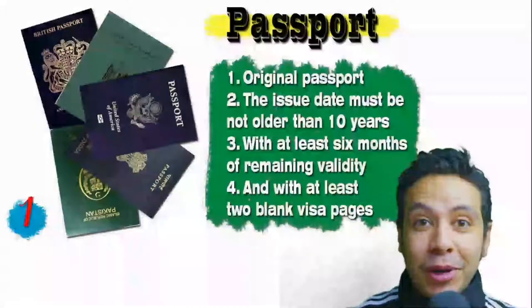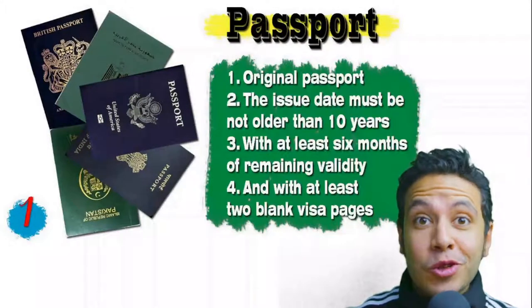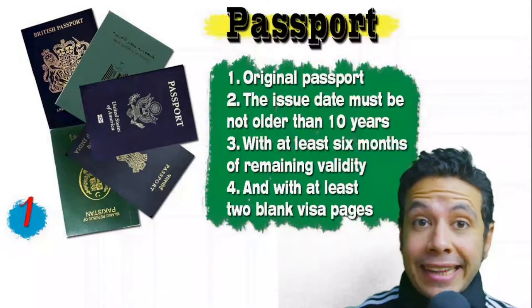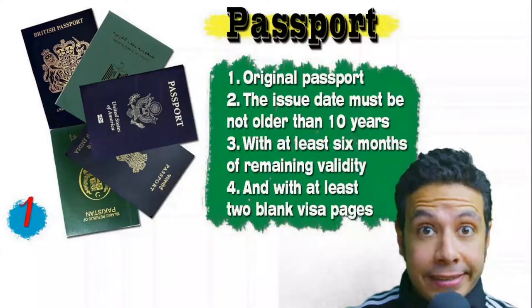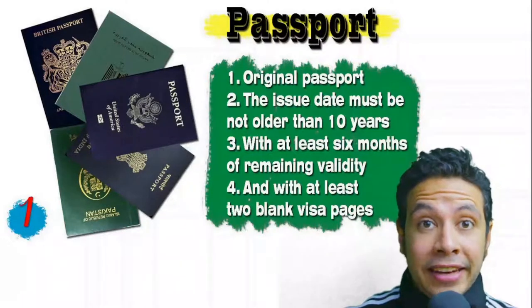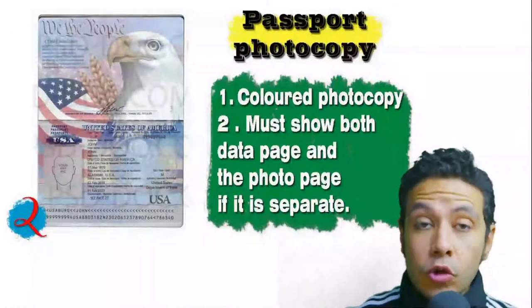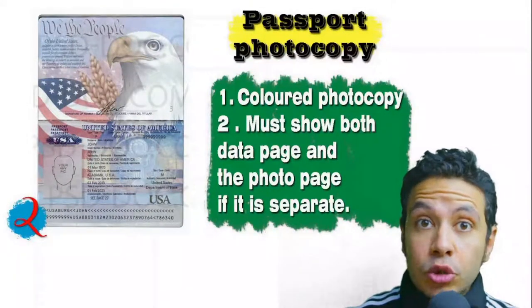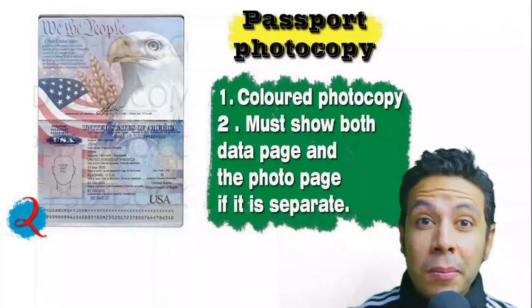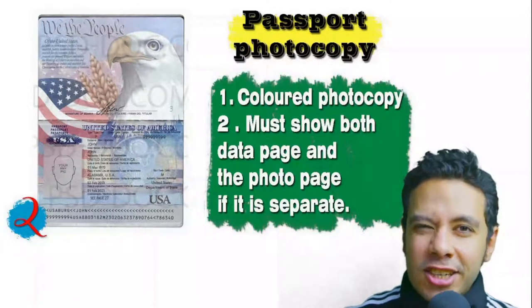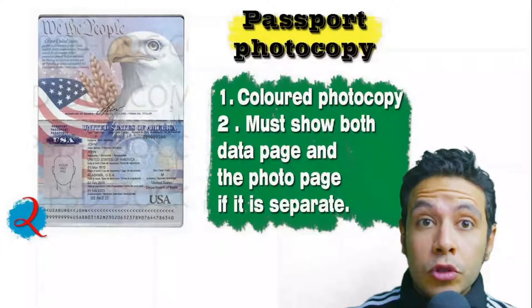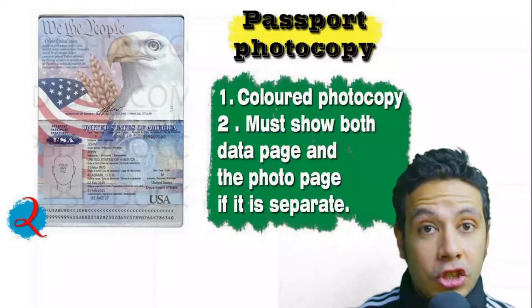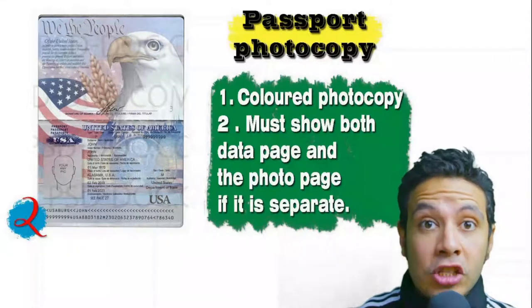Once your visa application is accepted, it will be sent back to you by email. Regarding required documents: your passport must be original, not older than 10 years, with at least six months of remaining validity and at least two blank visa pages for stamps. You will also need a passport photocopy — one copy or more, preferred in color — with both the data page and photo page showing.